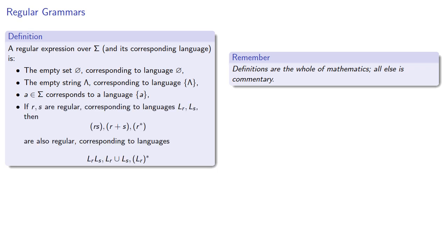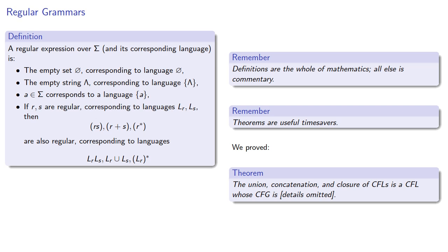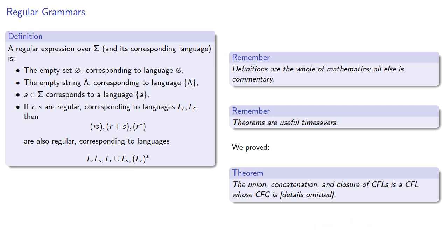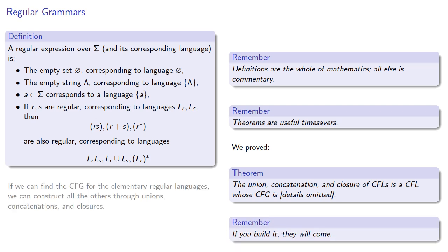While it is and will remain forever true that definitions are the whole of mathematics, all else is commentary, it's also true that theorems are useful time-savers. We proved that the union, concatenation, and closure of context-free languages is a context-free language. So if we can find the context-free grammar for the elementary regular languages, we can construct all the others through unions, concatenations, and closures.